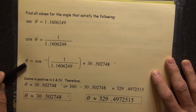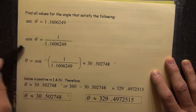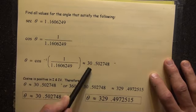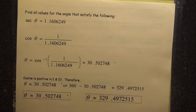Therefore, theta equals inverse cosine of that fraction because you do the inverse cosine of both sides. Giving you 30.502748.